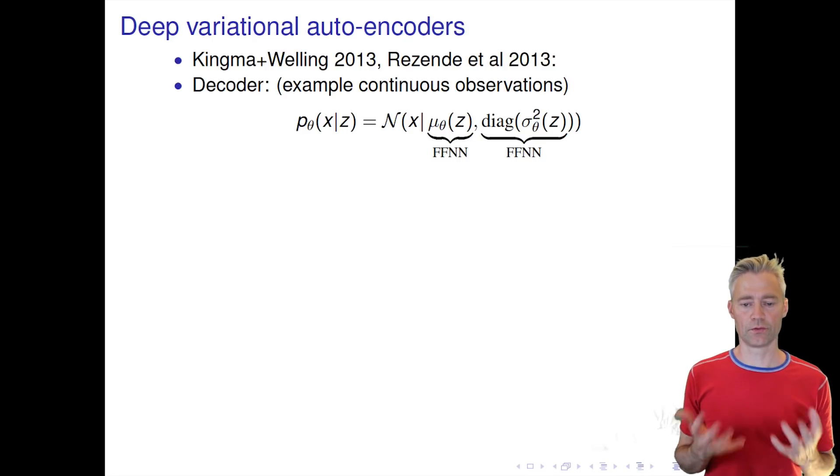The idea now is to be a little bit more specific about this decoder model. Let's say we have our observations that are continuous, so each element in x is a continuous number.